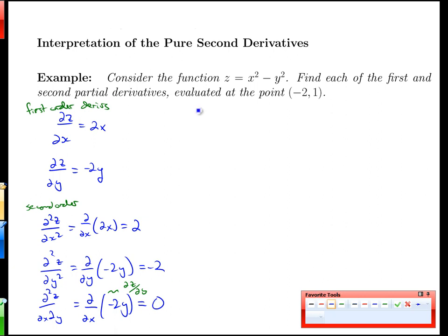At the point that we're interested in here, at the point (-2,1), the partial derivatives are 2x, that's negative 4, minus 2y is negative 2, and this is always 2, this is always negative 2, that's always 0. Okay, so that's the calculational side of partial derivatives, first order and second order partial derivatives. Now what does this mean in terms of the surface that is defined by this function, z equals x squared minus y squared?